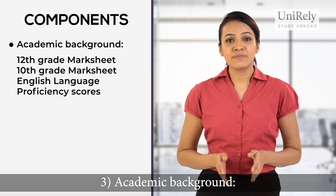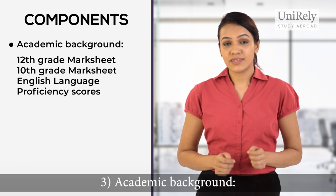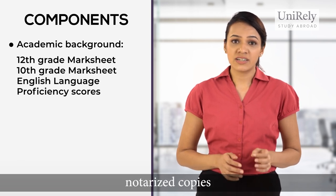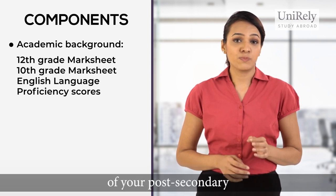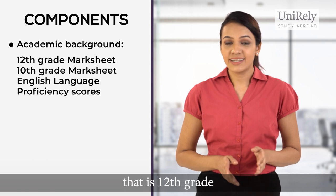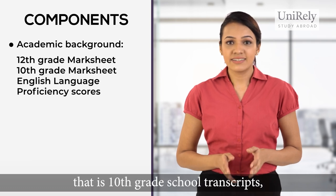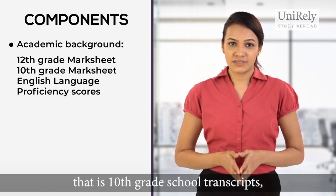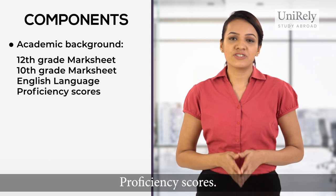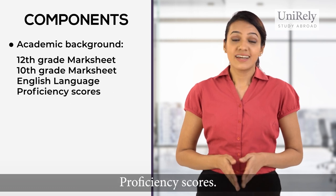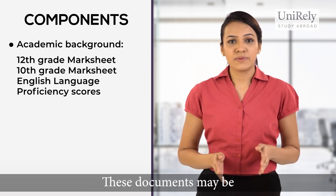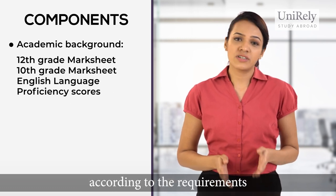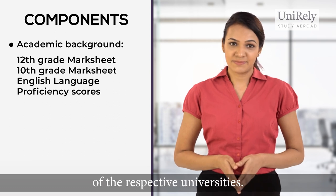Number three, academic background. In this section, you have to submit notarized copies of your post-secondary, that is 12th grade, and secondary, that is 10th grade, school transcripts, along with your English language proficiency scores. These documents may be mailed or uploaded according to the requirements of the respective universities.